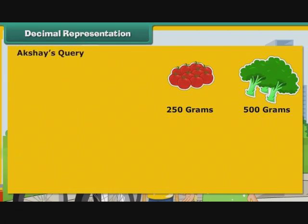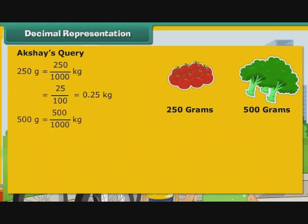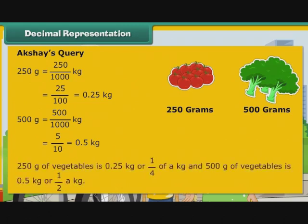Let us now express the vegetables Akshay's mother purchased as kilograms. 250 grams is equal to 250 by 1000 kg, that is equal to 25 by 100 kg, that is equal to 0.25 or 1 by 4 kg. 500 grams is equal to 500 by 1000 kg, that is equal to 5 by 10 kg, that is equal to 0.5 or 1 by 2 kg. So 250 grams of vegetables is 0.25 kg and 500 grams of vegetables is 0.5 kg or half a kg.